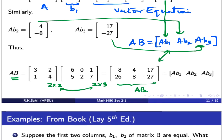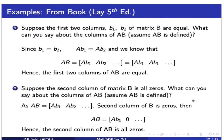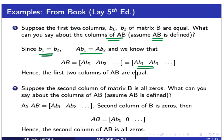Let's look at some examples from the book. Suppose the first two columns B1 and B2 of any matrix are equal. What can we say about the columns of the new matrix AB, assuming AB is defined? Since B1 equals B2, when I multiply A on both sides, AB1 equals AB2. By definition AB is the matrix with columns AB1, AB2, etc. Since AB1 equals AB2, the first two columns of the new matrix AB will also be equal.